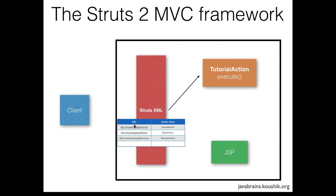The client has made a request and right now we are printing to the logs. The client is wondering what's going on. So we have to send a rendered JSP back to the client. How does an execute method transfer the flow of execution to the JSP?